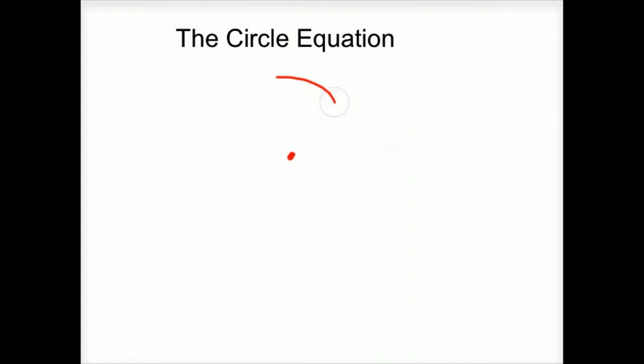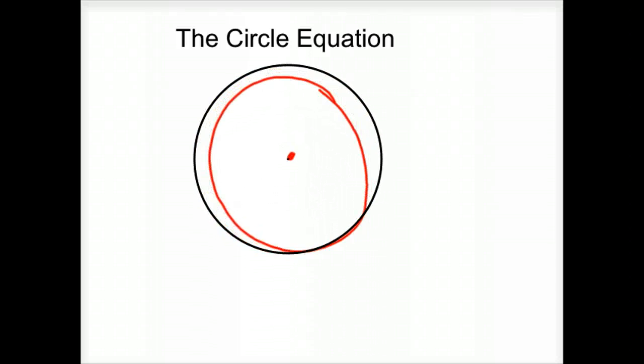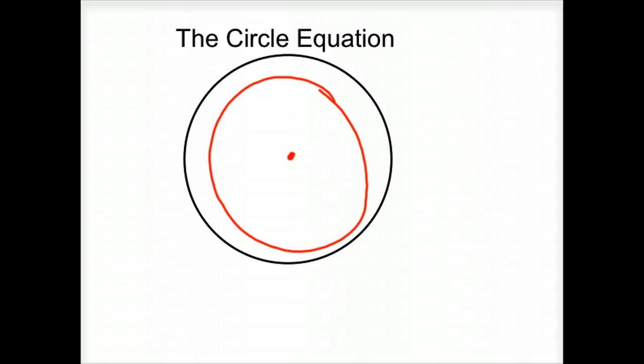It's all the points of the same distance around that center point. That was a pretty terrible one. I could have done one a little better like this. So there's my center point and all the points around that that are equal. So that looks a lot better. That's what a circle is.